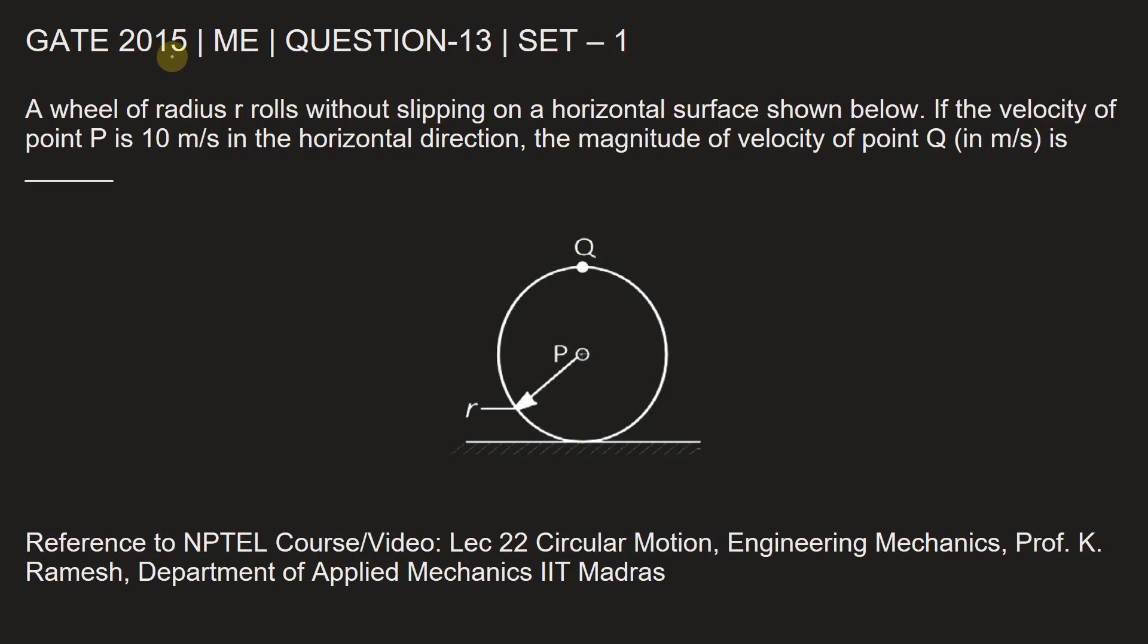This question is from GATE 2015 Mechanical Engineering paper, Set 1, Question Number 13. A wheel of radius r rolls without slipping on a horizontal surface shown below. If the velocity of point P is 10 meters per second in the horizontal direction, the magnitude of velocity of point Q in meters per second is dash.